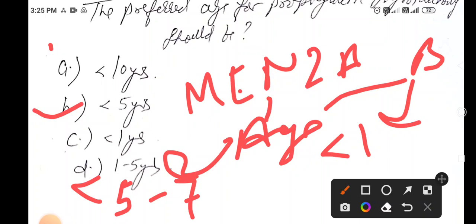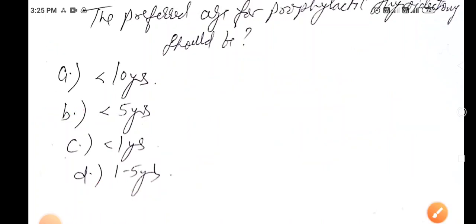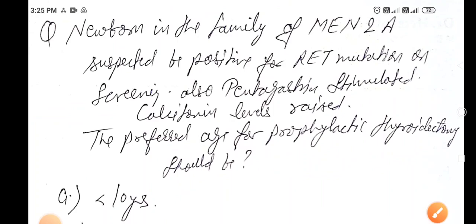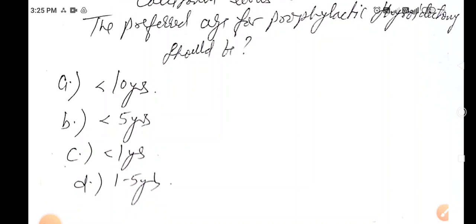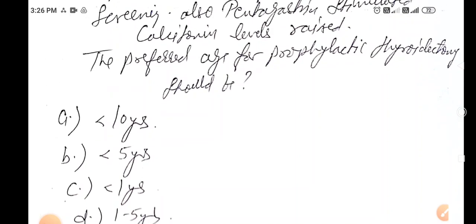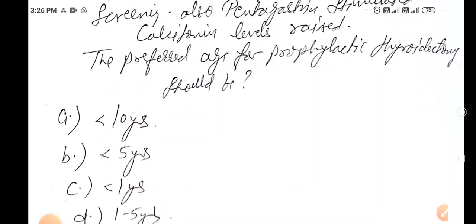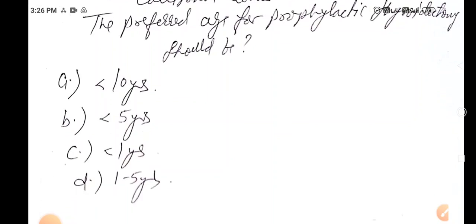You have to read the MCQ properly and try to answer in the comment section. MEN 1 other name is Wermer syndrome, MEN 2A is Sipple syndrome. MEN 1 has triple P. MEN 2A has parathyroid hyperplasia, medullary thyroid carcinoma, pheochromocytoma. MEN 2B has mucosal neuromas, marfanoid habitus, medullary thyroid carcinoma, pheochromocytoma. Thank you.